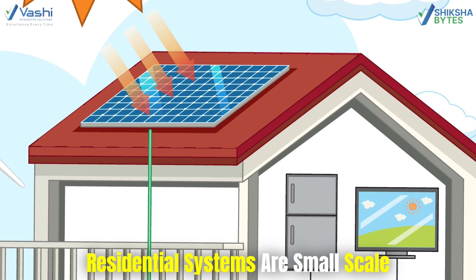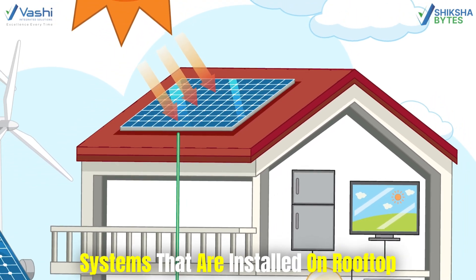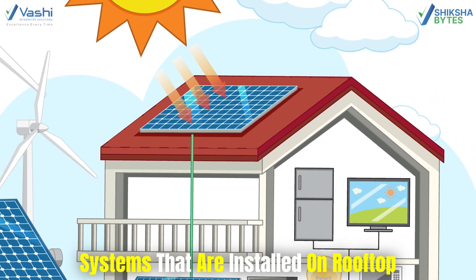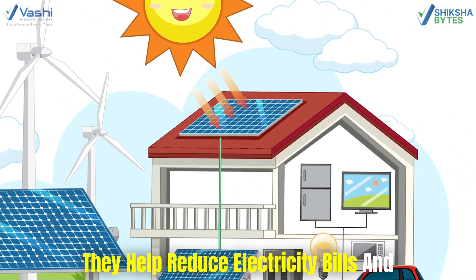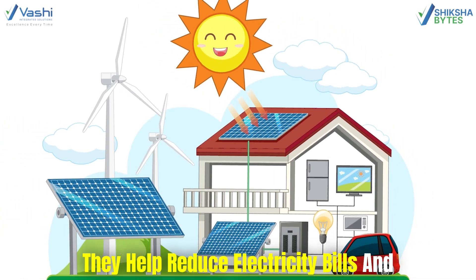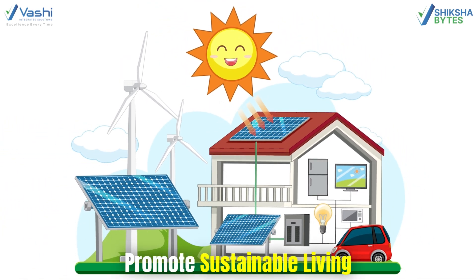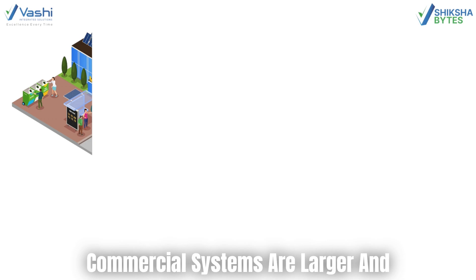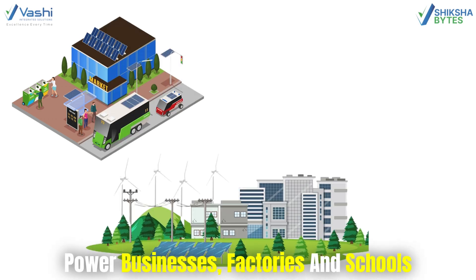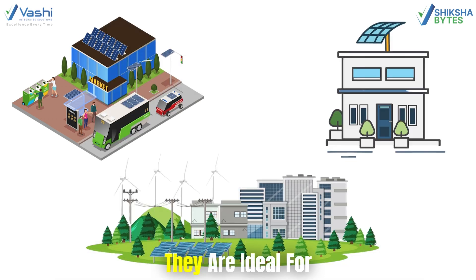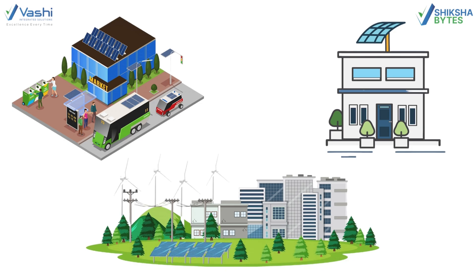Residential systems are small scale systems that are installed on rooftop of homes. They help reduce electricity bills and promote sustainable living. Commercial systems are larger and power businesses, factories and schools. They are ideal for reducing energy costs and support green initiatives.